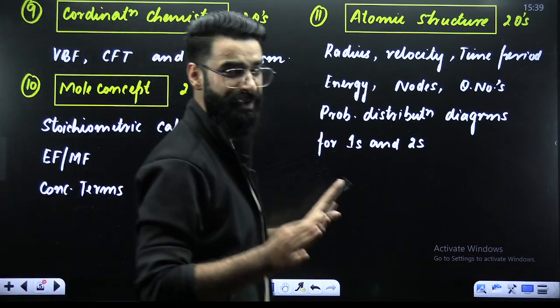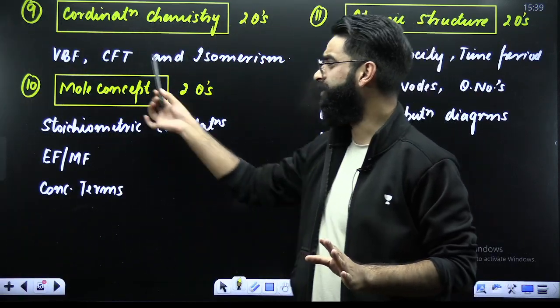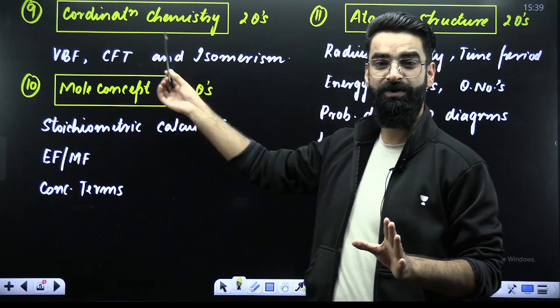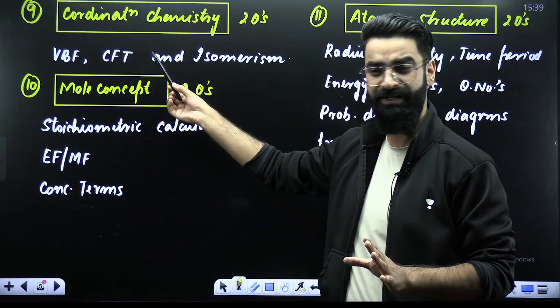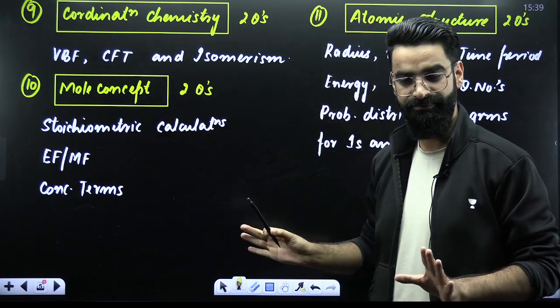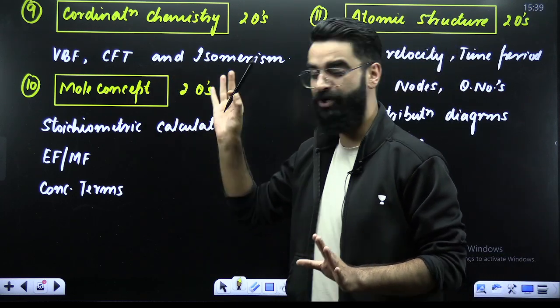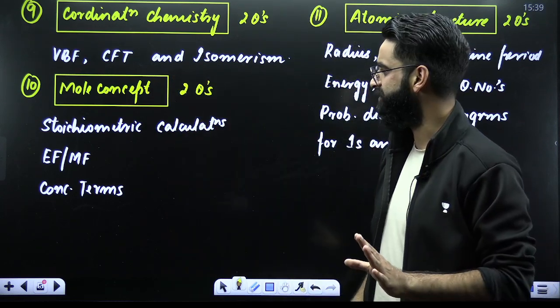Coordination chemistry — you'll be getting two questions from it. The three favorite topics are: valence bond theory, crystal field theory, and isomerism. These are the three short topics of the chapter coordination chemistry.